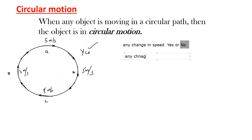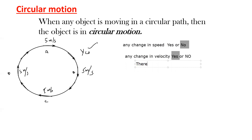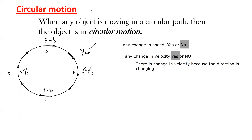The second part: is there any change in velocity? Keep in mind velocity is a vector quantity — it depends on direction as well. Yes, there is a change in velocity because the object is changing direction. The direction at A is different from direction at B, direction at B is different from direction at C, and direction at C is different from direction at D.